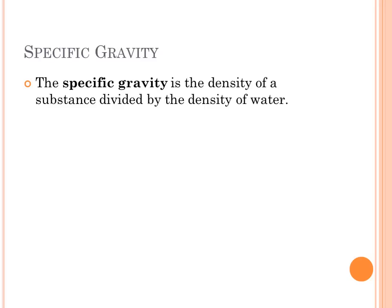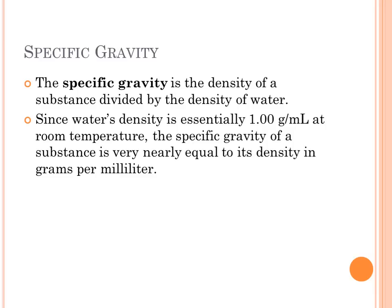Specific gravity. The specific gravity is the density of a substance divided by the density of water. But since water's density is essentially 1 gram per milliliter, we can say the specific gravity of a substance is pretty much equal to its density in grams per milliliter.